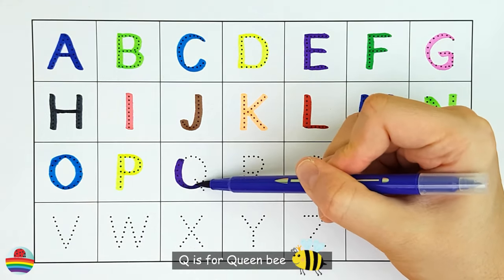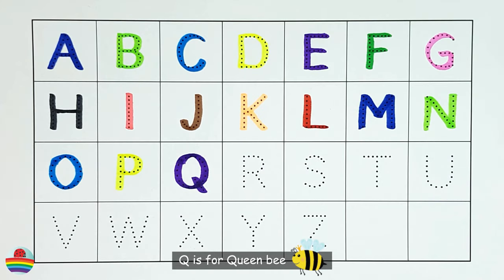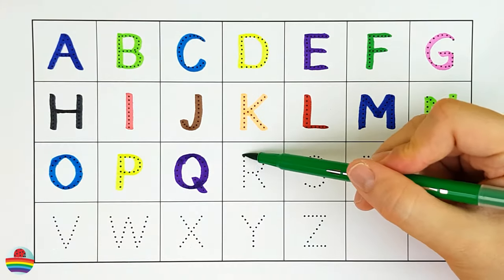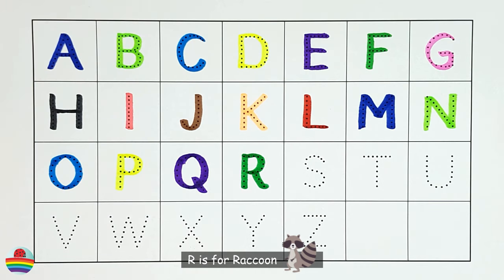Q. Q is for queen bee. Q. R. R is for raccoon. R.